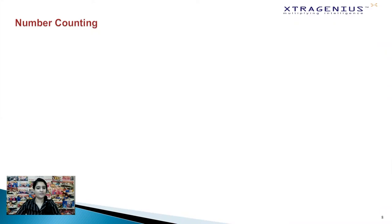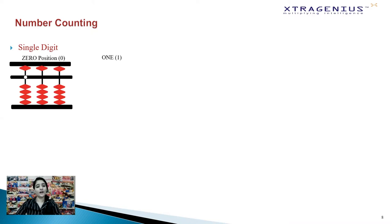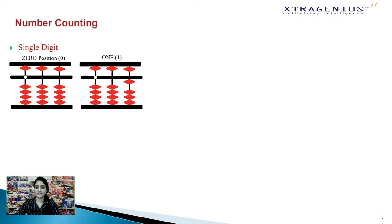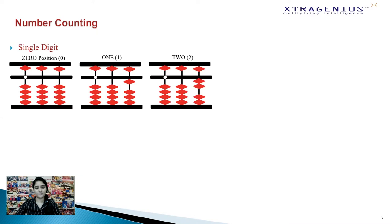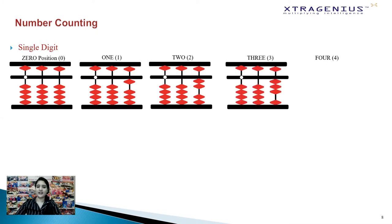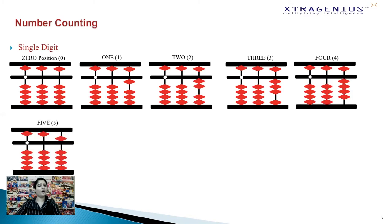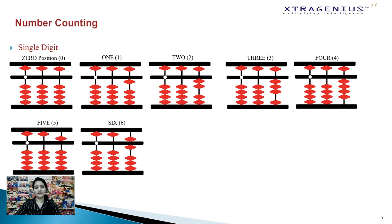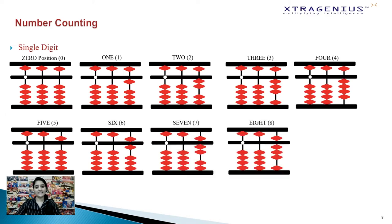Let's get into the fun part — how do we count numbers on the abacus? Let's start with single digit numbers. First, the zero position where all the beads are at home position. To count one, move one lower bead in the unit's place towards the center bar. For two, move two lower beads towards the center bar, and so on for three and four. For five, simply move the upper bead in the unit's place towards the center bar. For six, move the upper bead and one lower bead in the unit's place towards the center bar — and so on for seven, eight and nine.